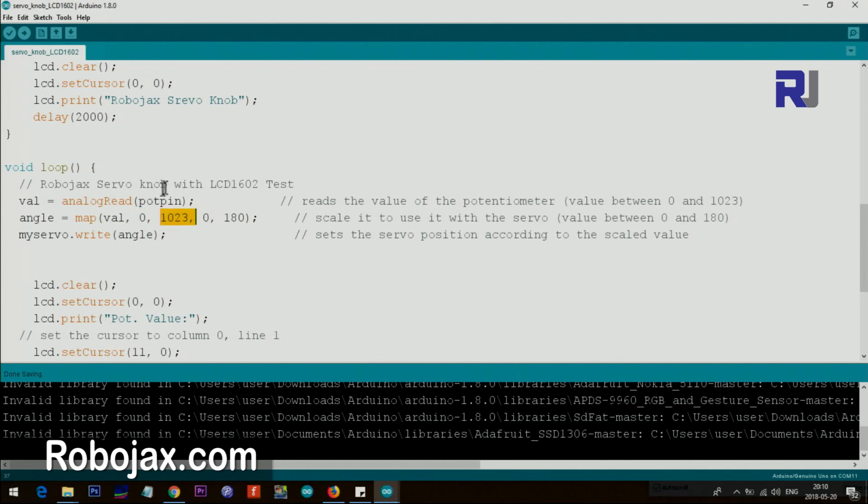The map, the job of the map is to get that value, which is from 0 to 1023, and convert it to a number relative to 0 to 180. What it means is if the value of the potentiometer is 0, the angle is 0. If the value is 1023, the angle is 180. And any other value between these two accordingly will be calculated, and the result will be here as an angle. Then here we say myServo.write, and this angle, whatever is the angle, we send that angle.